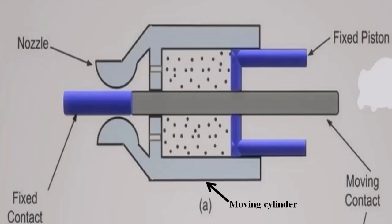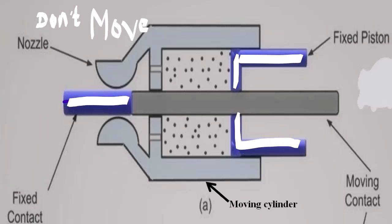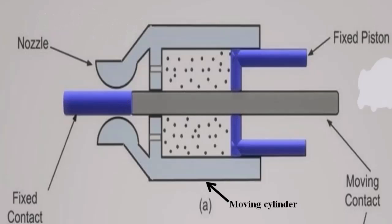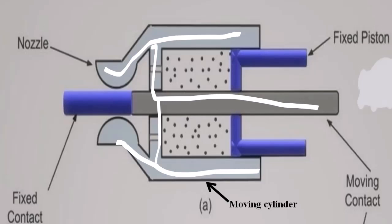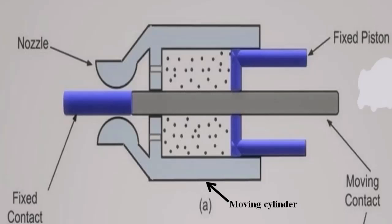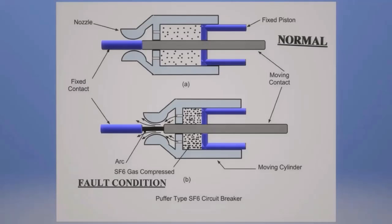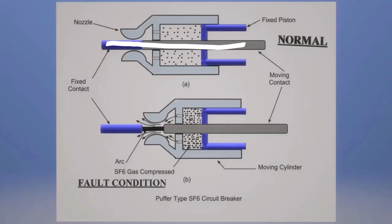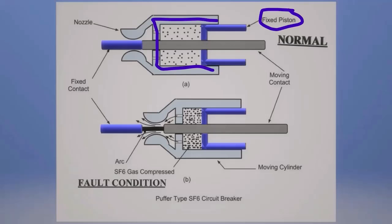This is the moving cylinder and moving contact. This is the normal working condition. The moving cylinder and moving contact is closed. The current is fixed. The moving cylinder is fixed and the SF6 gas is compressed.